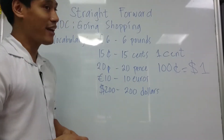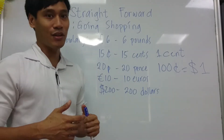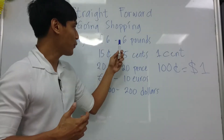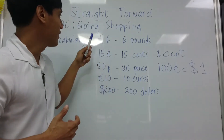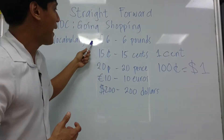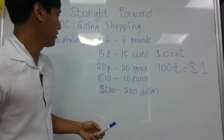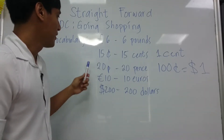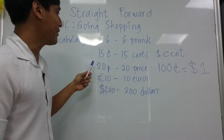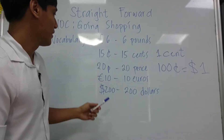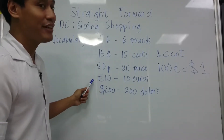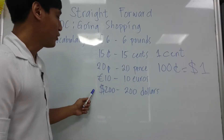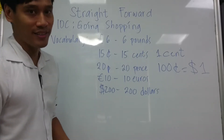Now let's read together. So let's start: six pounds, fifteen cents, twenty pence, ten euros, two hundred dollars.